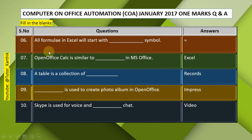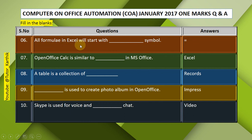Question 5: The — key is used to move the insertion pointer to the beginning of the line. Answer: Home. The Home key is used to move the insertion pointer to the beginning of the line. Question 6: All formulas in Excel will start with —. Answer: Equal sign.